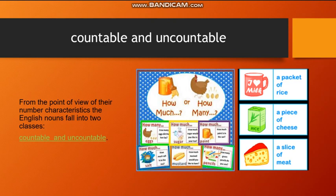From the point of view of their number characteristics, the English nouns fall into two classes: countable and uncountable.